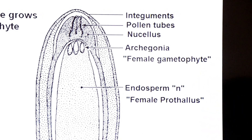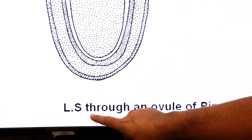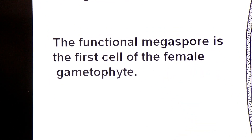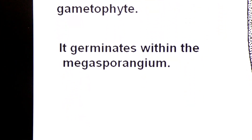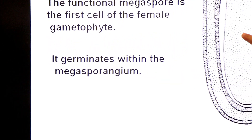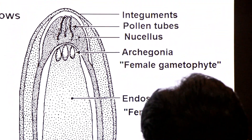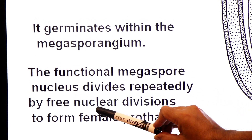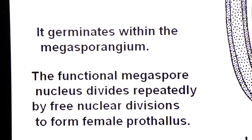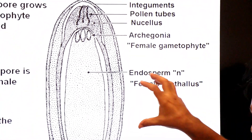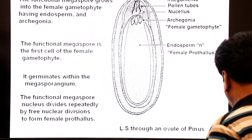This diagram shows the longitudinal section through an ovule of Pinus. The functional megaspore is the first cell of the female gametophyte. It germinates within the megasporangium (nucellus) and produces endosperm and archegonia. The functional megaspore nucleus divides repeatedly by free nuclear divisions to form the female prothallus, which has endosperm and 2 to 5 archegonia.